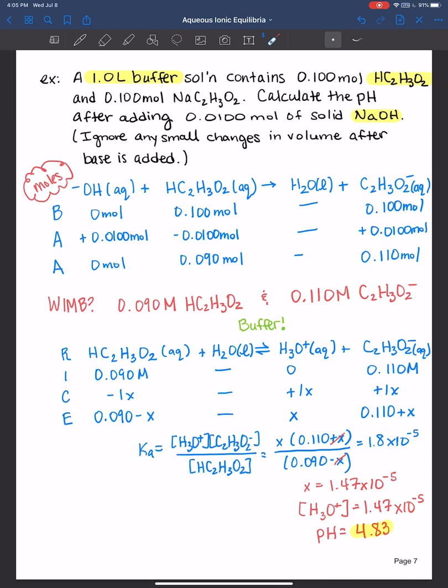Now in the next video that I will post, I talk about buffering capacity and that buffers are not always foolproof, right? If you had too much base, you're going to essentially break your buffer. Same goes for adding too much acid. But in this case here, the base that was added was still the limiting reactant, and so the acetic acid was able to neutralize that added base and you still had a buffer left over.